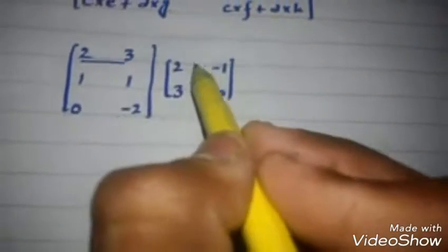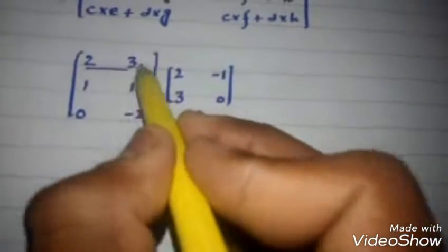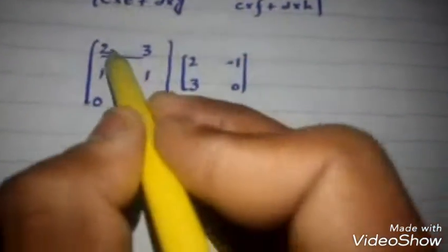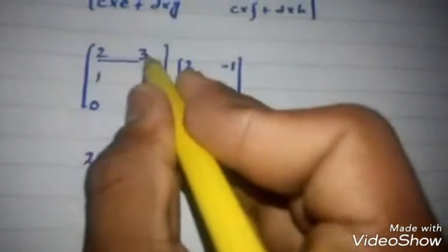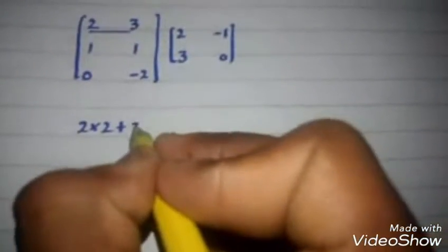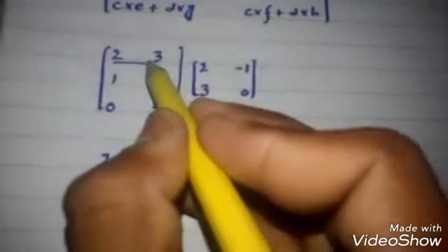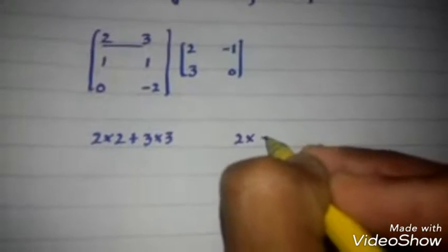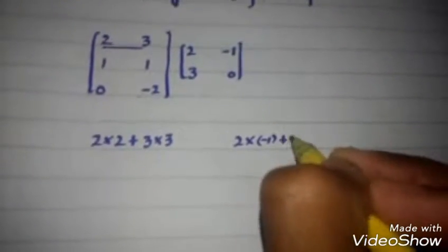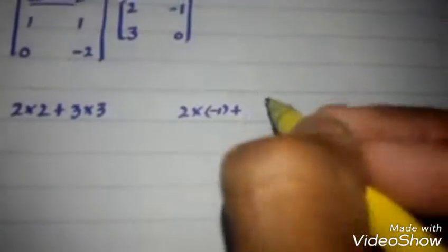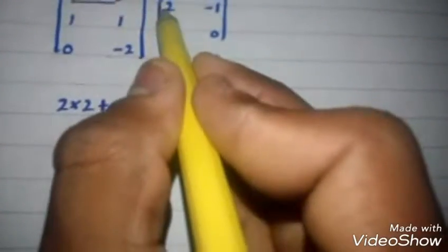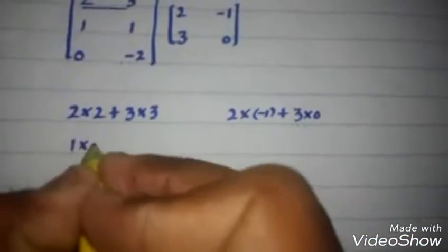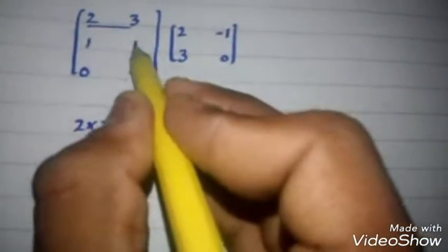We multiply the first row by the first column: 2×2 + 3×3. Then first row by the second column: 2×(−1) + 3×1. Then first row by the third column: 2×1 + 3×1. Next, second row by first column: 1×2 + 1×3.